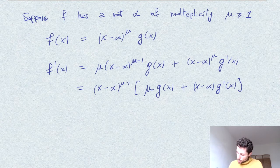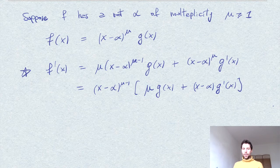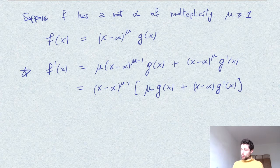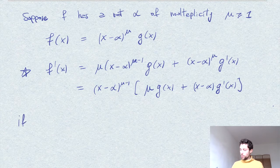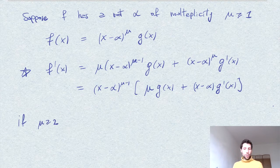So I'm going to use this identity here, star. So going back to our problem, if we have then a root of, say, multiplicity at least two,